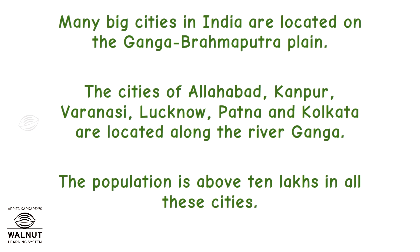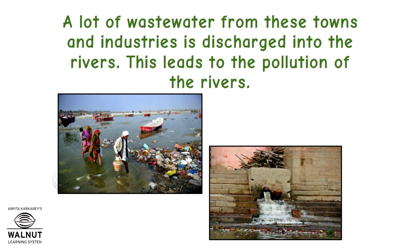Many big cities in India are located on the Ganga Brahmaputra plain. The cities of Allahabad, Kanpur, Varanasi, Lucknow, Patna, and Kolkata are located along the river Ganga. The population is above 10 lakhs in all these cities. A lot of wastewater from these towns and industries is discharged into the rivers, which leads to the pollution of the rivers.